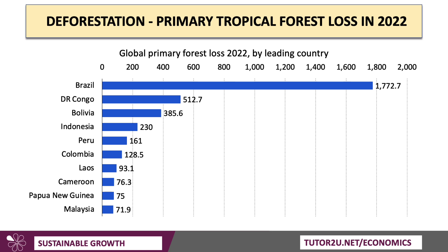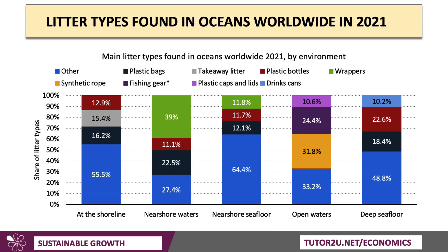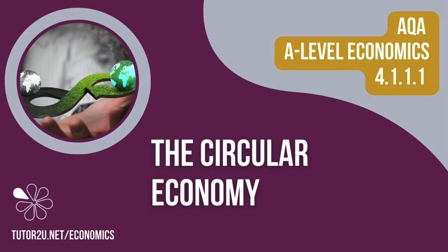This chart shows global primary forest loss in 2022 by leading country — 'leading' being a slightly pejorative word there. Hopefully the new Brazilian government will make headway in cutting the rates of deforestation. Litter and waste is also an enormous issue. This is a survey of litter types found in oceans worldwide in 2021 — from plastic bags, plastic bottles and wrappers, synthetic rope, fishing gear, plastic caps and lids, to drinks cans. The plastic waste tsunami is something many countries are trying to address. In our next video, we'll take a few minutes to think about something called the circular economy.